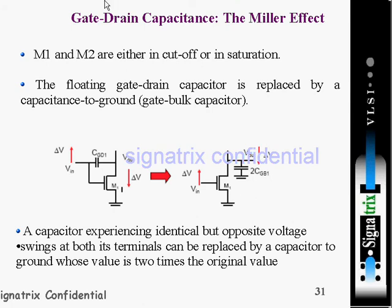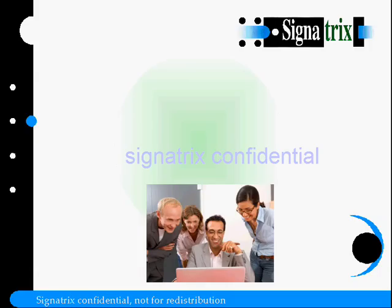They have converted this gate-to-drain capacitance into two times CGD1 — gate to bulk — and that is because of the Miller effect.